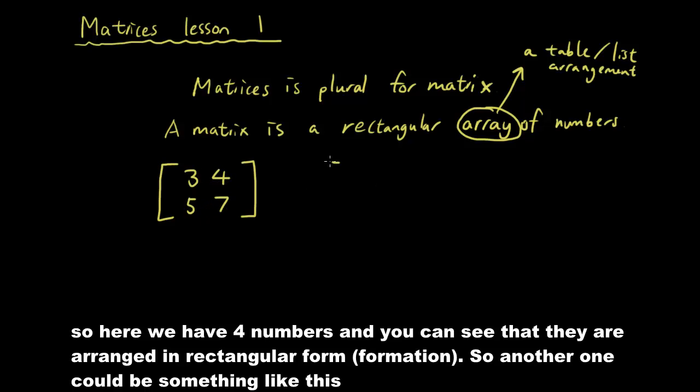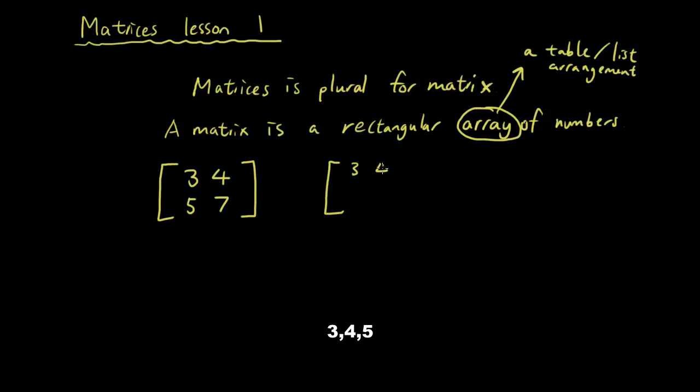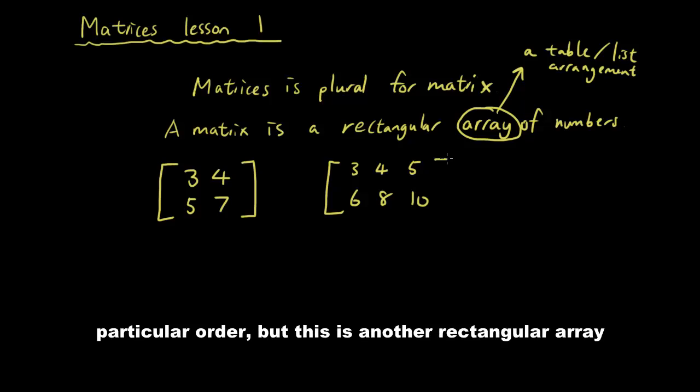So another one could be something like this: 3, 4, 5, 6, 8, 10. They don't have any particular order, but this is another rectangular array.